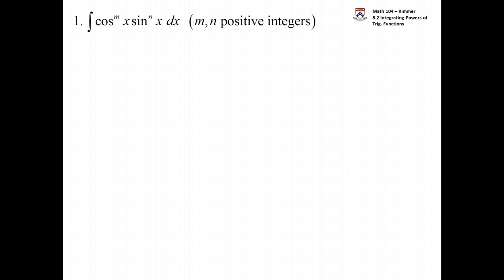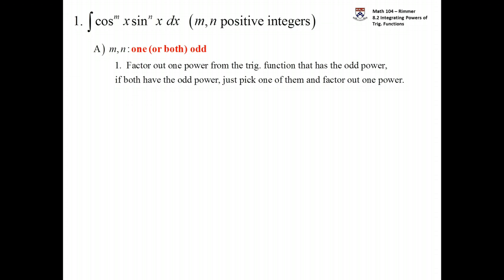First up where we have a cosine power and a sine power, it depends on whether or not there's an odd present. Either one of them is odd or both of them is odd. Here's what you do. You factor out one power from the trig function that has the odd power. If both of them have the odd power, just pick one of them and factor out one power from that.